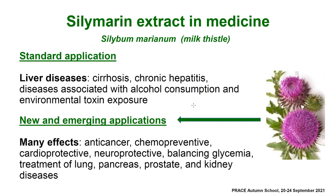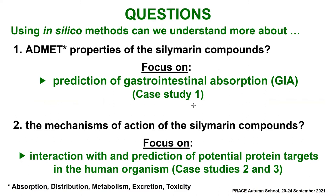The seeds and roots of the plant are used to get the so-called silimarin extract, whose standard application is for treatment of liver diseases — cirrhosis, chronic hepatitis, diseases associated with increased alcohol consumption, and exposure to environmental toxins. New and emergent applications reveal a number of new effects: anti-cancer, cardio- and neuroprotective, treatment of diseases of lung, pancreas, prostate, and kidney. These effects put several questions when using this silimarin extract.